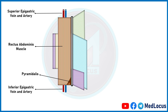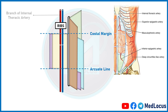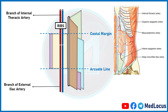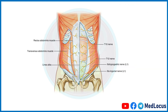The superior epigastric artery is a branch of the internal thoracic artery and enters the rectus sheath by passing in front of the arcuate line. These arteries anastomose with each other within the sheath and supply the rectus muscle. There are also six thoracic nerves in the rectus sheath, including the lower five intercostal nerves and one subcostal nerve.